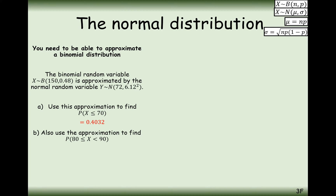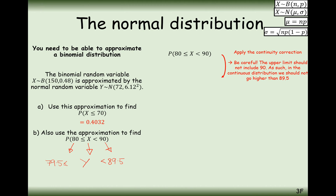Part (b): find the probability that X is between 80 and 90, including 80 but not including 90. Applying the continuity correction: for 80 (included), the decimal range goes down to 79.5; for 90 (excluded), we only go up to 89 successes, so the decimal range goes up to 89.5. Our continuity correction gives us the interval 79.5 to 89.5.